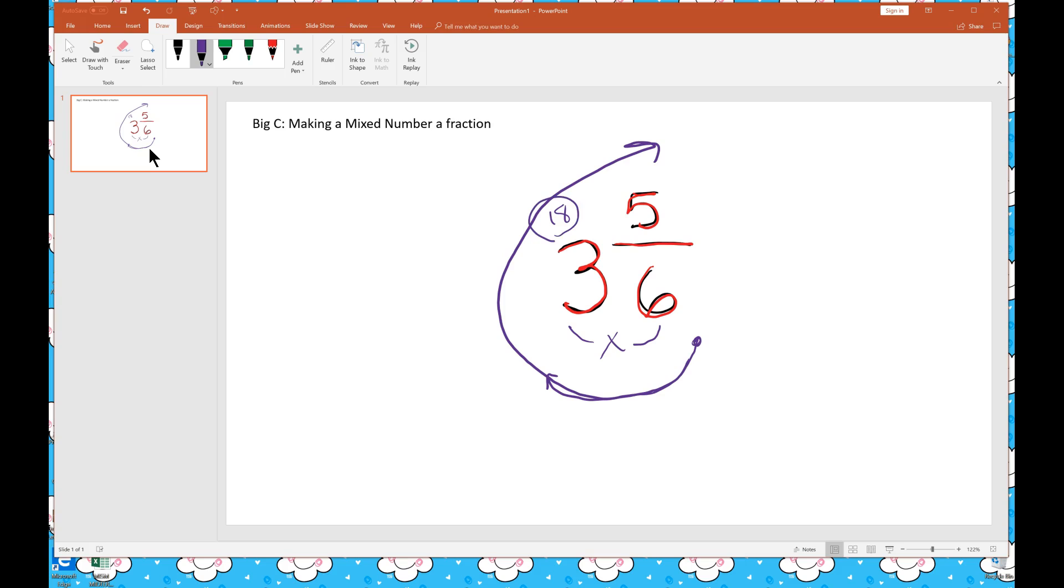When we get our 18, we add it to the numerator, or in this case, 5. 18 plus 5 is 23. We write 23 for our new numerator.